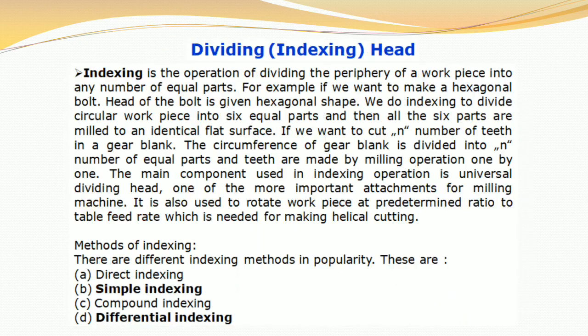The dividing or indexing head is used for indexing, which is the operation of dividing the periphery of a workpiece into any number of equal parts. For example, if we want to make a hexagonal bolt, the head of the bolt is given a hexagonal shape — we do indexing to divide the circular workpiece into six equal parts, and then all six parts are milled to an identical flat surface. If we want to cut any number of teeth in a gear blank, the circumference of the gear blank is divided into equal parts and teeth are made by milling operation one by one.